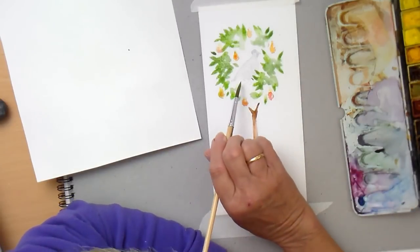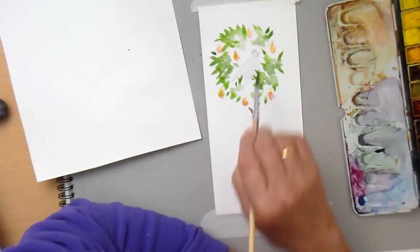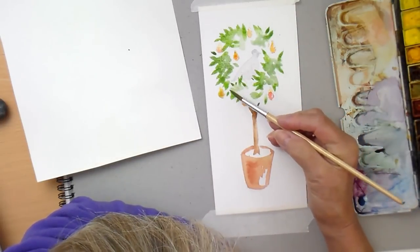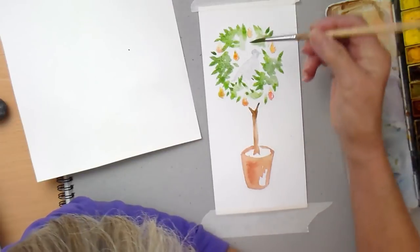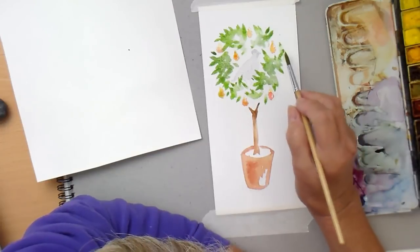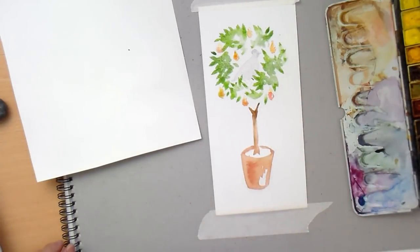So we've got a few leaves in front of the partridge so he looks as if he's sitting inside the tree rather than as he looked plonked on top. Right I'm going to let that dry off for a couple of minutes and then we can go to the next stage.